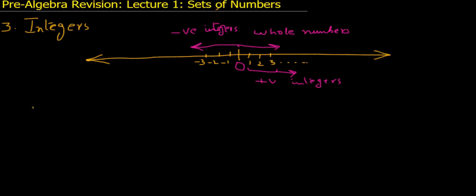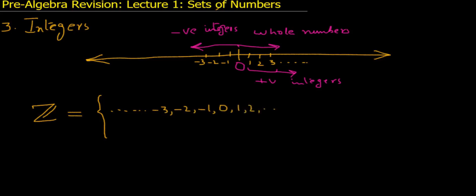The set of integers is represented by Z, written as: {..., -3, -2, -1, 0, 1, 2, 3, ...} — with dots on both sides to indicate it extends to negative and positive infinity.